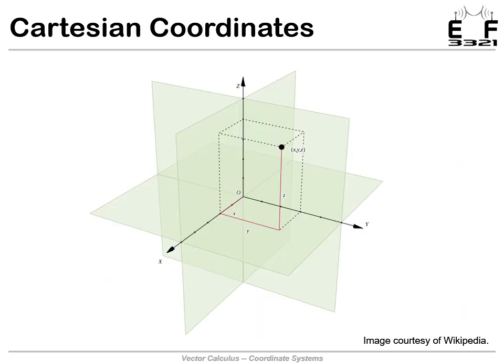Cartesian coordinates — this is ordinary XYZ. X tells us the position, or how far from the origin along the X axis our point is located. Y tells us how far along the Y axis our point is located, and Z tells us how far along the Z axis our point is located. These are very likely the coordinate system that you are most familiar and most comfortable working with.